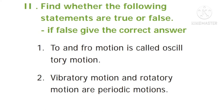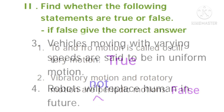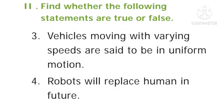State true or false; if false, correct the statement. Question number one: to and fro motion is called oscillatory motion. Answer: true. Second question: vibratory motion and rotatory motion are periodic motion or not? Answer: they are periodic motion.